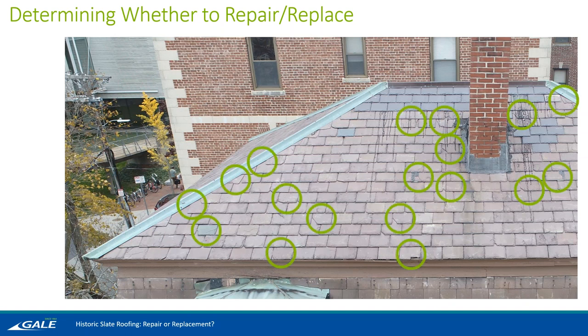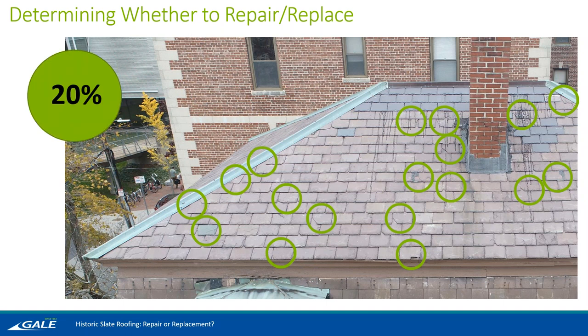The threshold to keep in mind is 20%, and this comes directly from the Preservation Brief. Once you have 20% or more of the slate on your roof requiring repairs, it starts to become more economical to fully remove and replace the roof system than to tackle all those individual repairs — due to access, trafficking the slate, and costs that just don't really add up over this threshold.